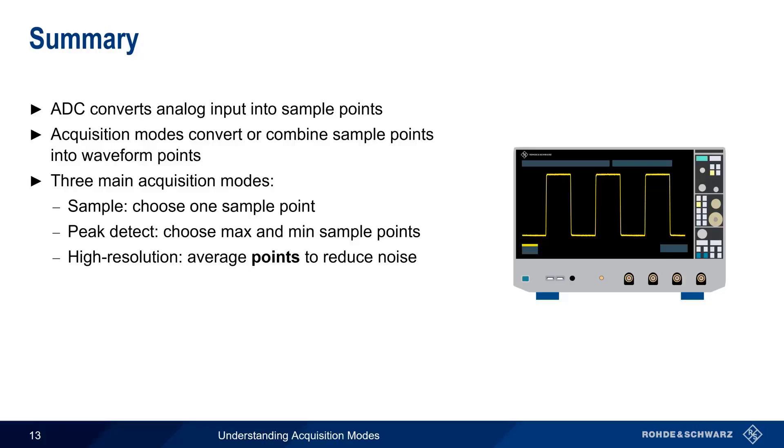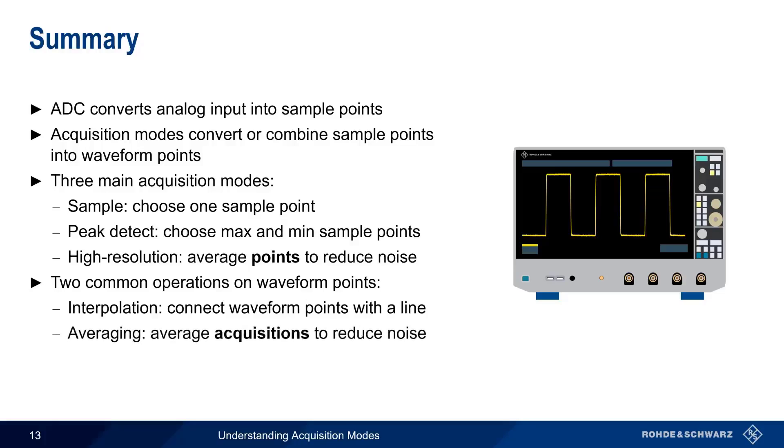Various operations are then often performed on the waveform points, and in this presentation, we briefly covered the two most common ones. Interpolation defines the method used to draw lines or curves between the individual waveform points, and averaging is often used to reduce noise by averaging multiple waveforms together.